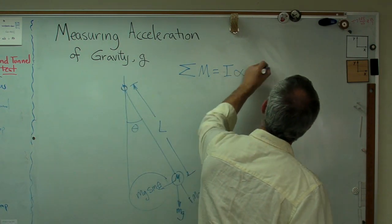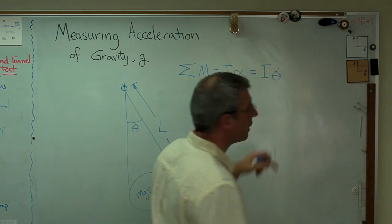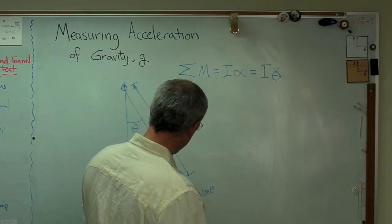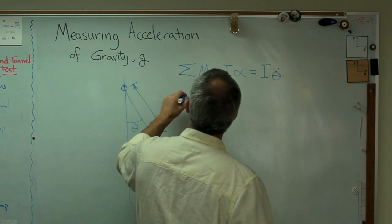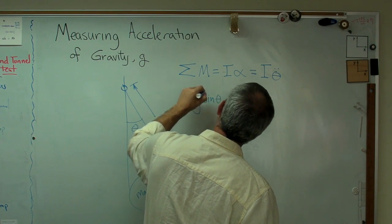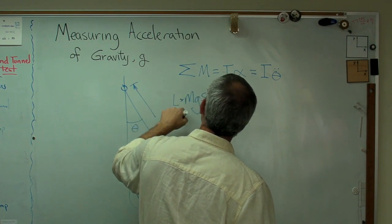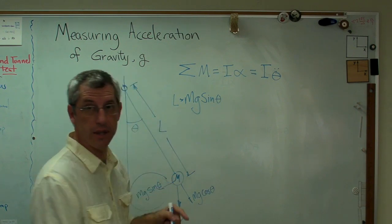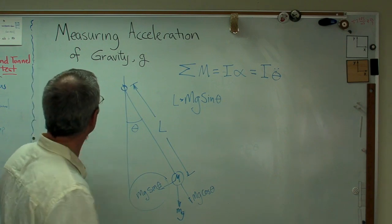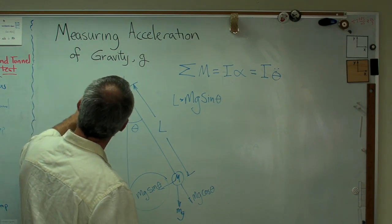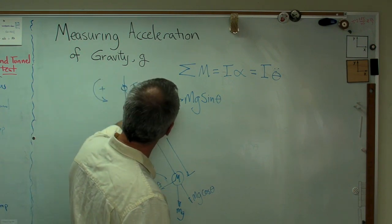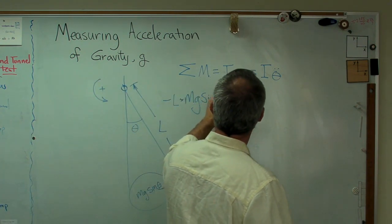And that's really I theta double dot. That's the second time derivative of theta. There's only one external moment here, and that's going to be mg sine theta times L. So there's a force times a distance. That's a moment. We've got to have a positive sign convention here. The way I've gotten this drawn, that's my positive rotation sign convention. This is actually pushing the other way, so I'm going to put a minus sign in there.